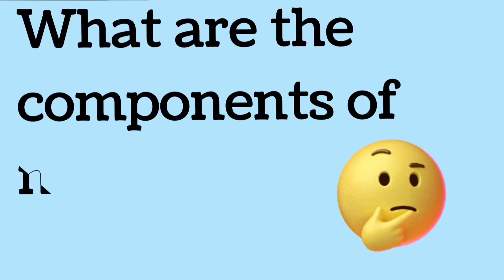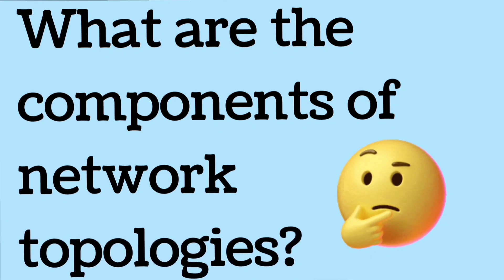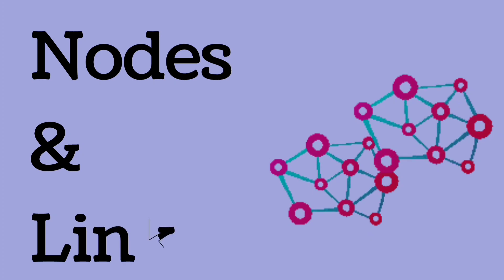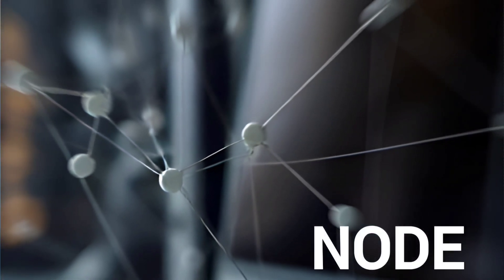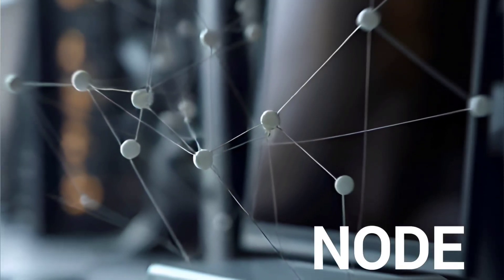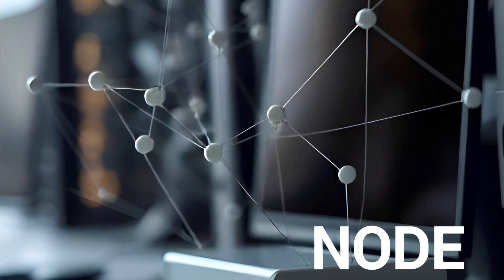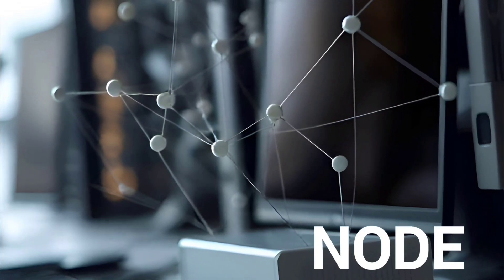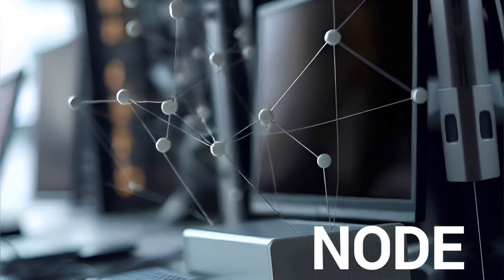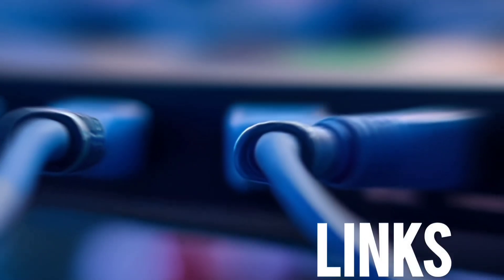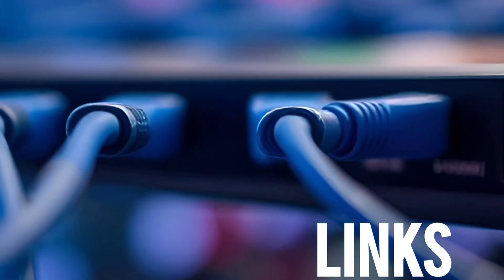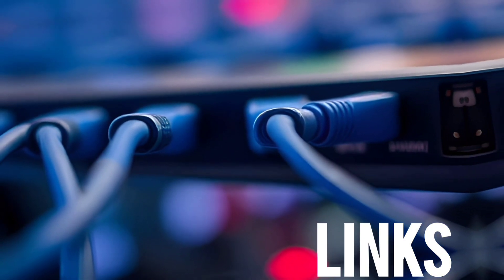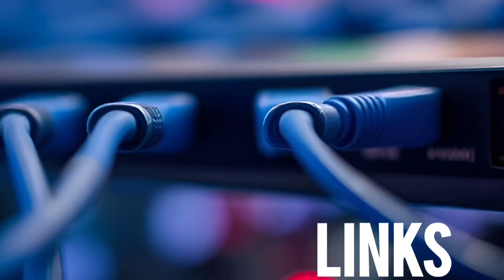What are the components of network topologies? Network topologies consist of two primary components: nodes and links. A node is any device connected to a network — it can be a computer, phone, printer, or router. Links are the medium of transmission used to transfer data between devices in a network, and links can be wired or wireless.